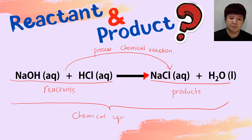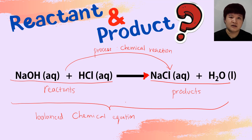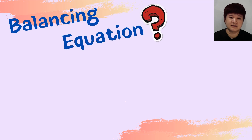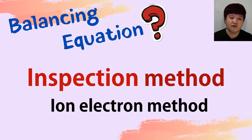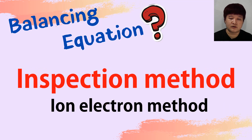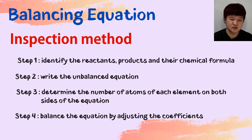The purpose of today's video is to write a balanced chemical equation. Let's look at how to balance a chemical equation. We have two methods: the inspection method and the ion-electron method. For this part of the video we'll focus only on the inspection method.